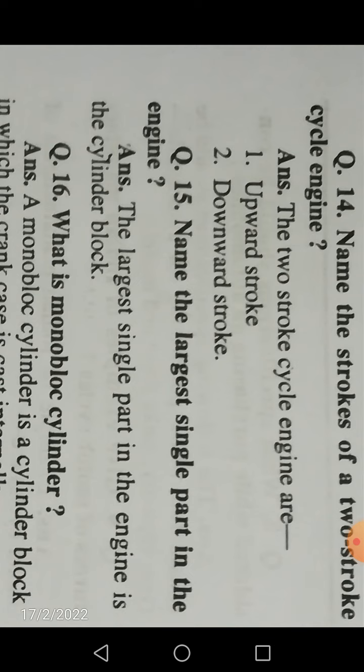Name the strokes of a two-stroke engine. There are only two strokes: the upward stroke and the downward stroke. In the upward stroke, suction and compression are completed, and in the downward stroke, power and exhaust strokes are completed.